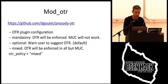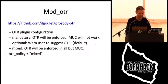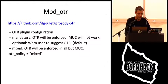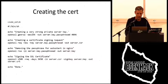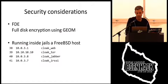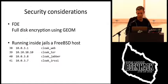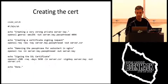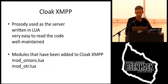There's a slide missing for mod_onions, but the onion server uses the CloakTor jail for communicating. It has its own Tor client running that talks to the rest of the Tor network, and of course I've set up the hidden service for it inside that jail.